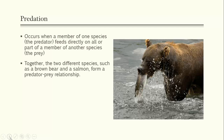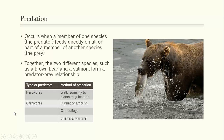Both herbivores and carnivores can be considered predators. Herbivores can simply walk up to a plant and eat it. Carnivores can pursue, ambush, or camouflage themselves to surprise their prey. They can also use chemicals to stun or sedate prey before eating it. These strategies illustrate the variety of methods used in predator-prey relationships.